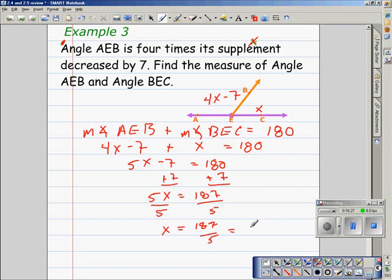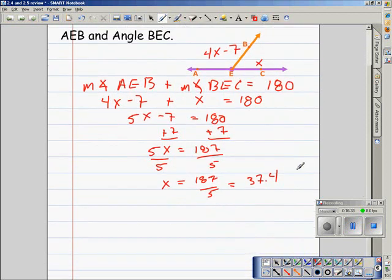Now we're not done yet. 37.4 is the measure of angle BEC.